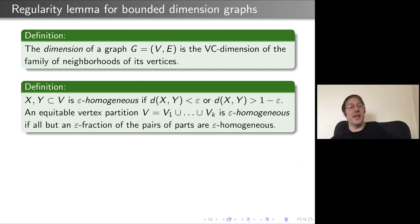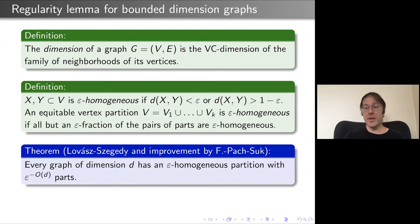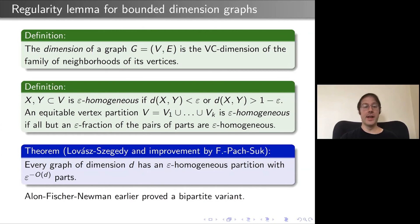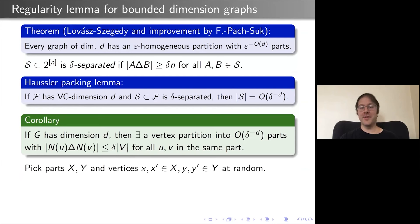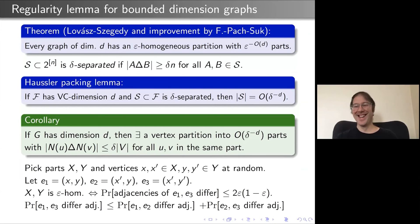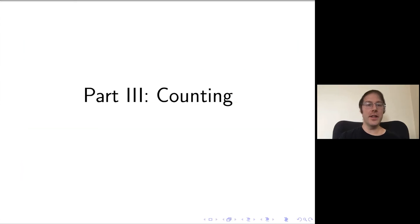For graphs of bounded VC dimension, there's a nice regularity lemma developed by Lovász and Szegedy, improved in terms of dependencies and with a simpler proof with Janos Pach and Andrew Suk and extended to hypergraphs. I'll briefly mention counting: let F be a hereditary family of graphs. If F is all graphs, there are exactly 2^(N choose 2) labeled graphs on N vertices. When do you have significantly less?